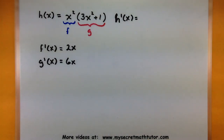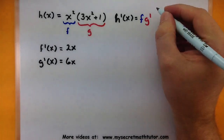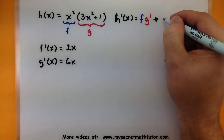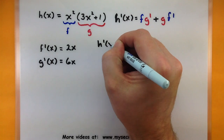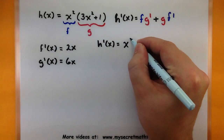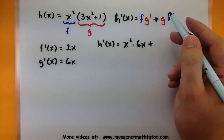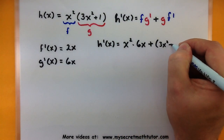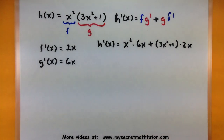Now let's carefully write down where all of these pieces are going to go. We want our first function, just as it is — unchanged — multiplied by the derivative of our second. Then we'll add that to our second function, multiplied by the derivative of the first. So h prime of x is equal to f, that's x squared, multiplied by the derivative of g — 6x — plus g, which is 3x squared plus 1, multiplied by the derivative of f, which is 2x.